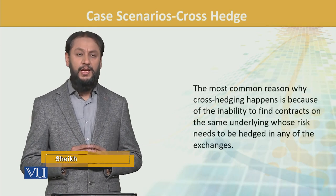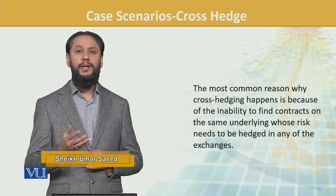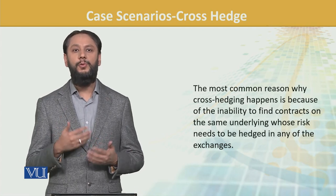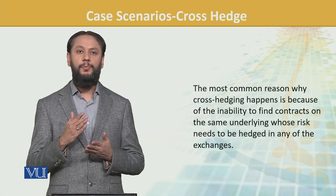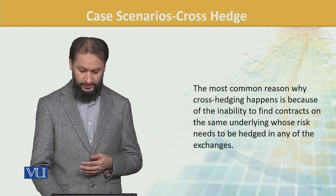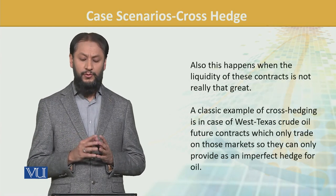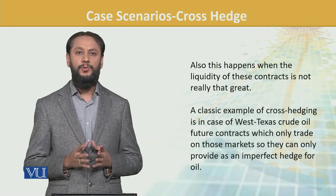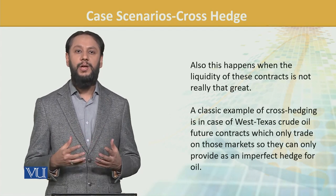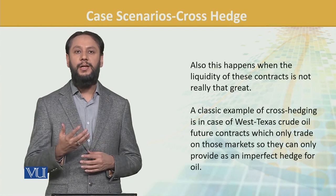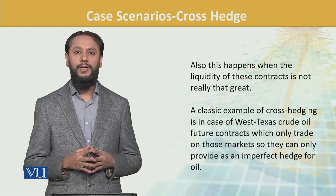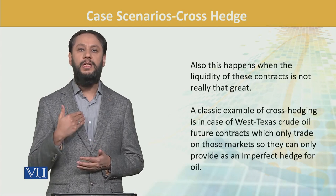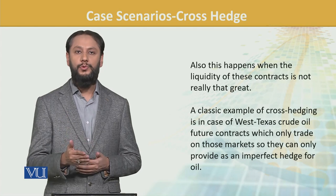The most common reason why cross hedging happens is because of the inability to find the contract. If you have a position but no matching contract, you have to explore an alternate position for cross hedging. It also happens when the liquidity of the contract is not great — when the derivative available is not liquid enough or the market does not have sufficient depth in that particular instrument, then you look for a product which is actively traded and where liquidity exists.